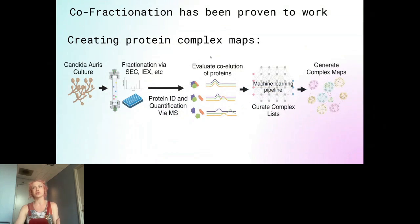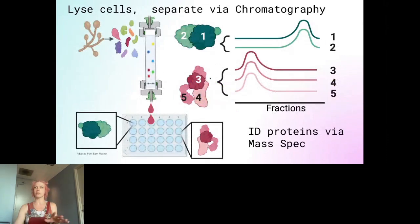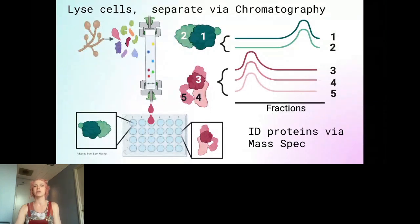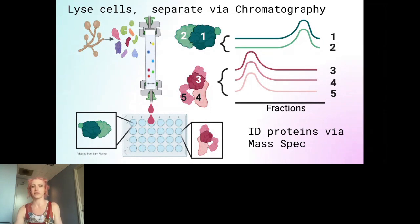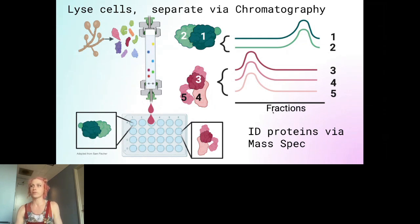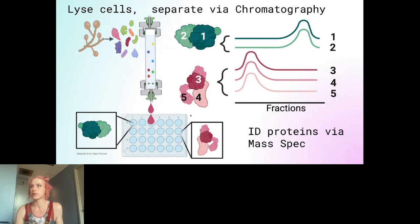We're going to use co-fractionation to create a complex map. We start with our model organisms, lyse the cells gently so as to keep the multi-protein complexes intact, and then separate via chromatography — size exclusion, ion exchange, or isoelectric point — and gather them in fractions. The wells correspond to the x-axis showing which fraction proteins are in, and the y-axis corresponds to the abundance of proteins.